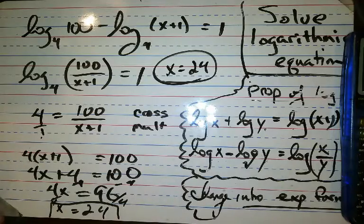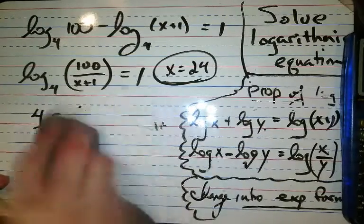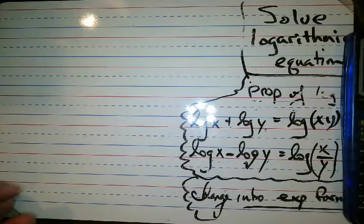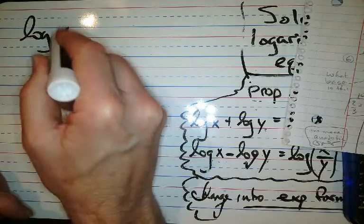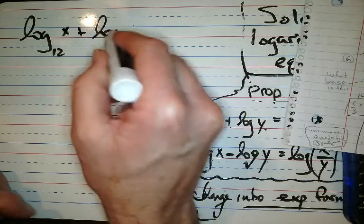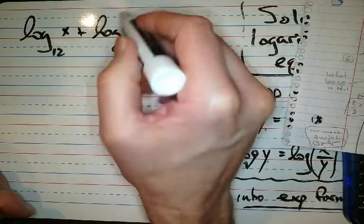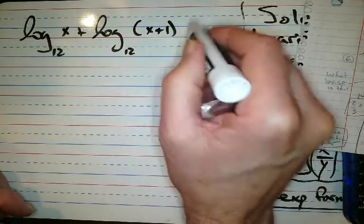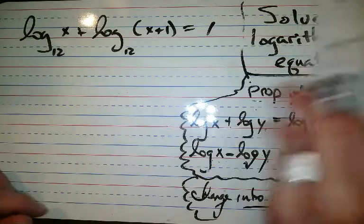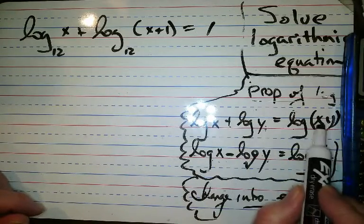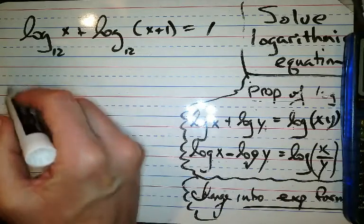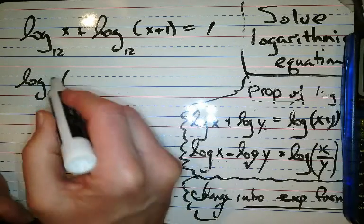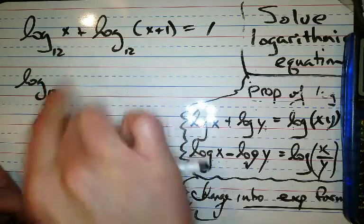Okay, we did 2 subtraction. Let's do 2 multiplication. Now multiplication is the one that is tricky. I saved the best for last. Here we go. Log base 12 of x plus log base 12 of x plus 1 equals 1. So we know that when we're adding, we change that to be one log that has multiply. Multiply the inside parts. So we're going to have log base 12 of x times x plus 1 equals 1.